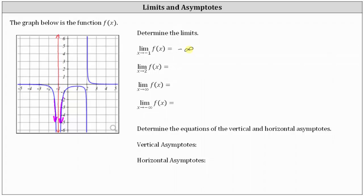Now negative infinity is not a real number, so technically this indicates the limit doesn't exist. But because the function values are decreasing without bound as we approach negative one from the left and right, we do indicate negative infinity.